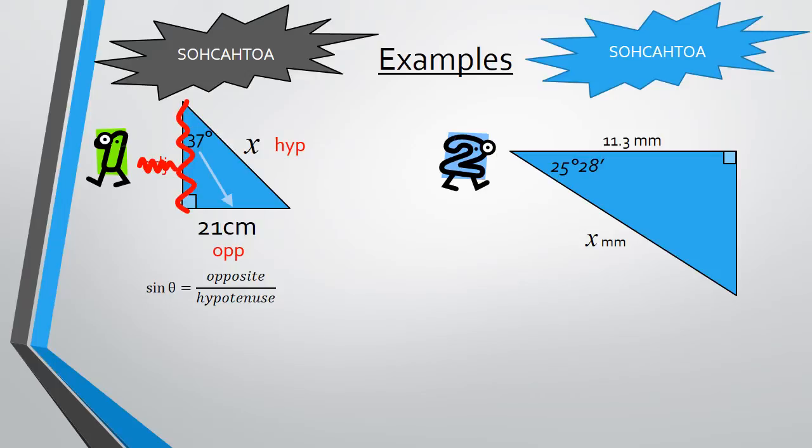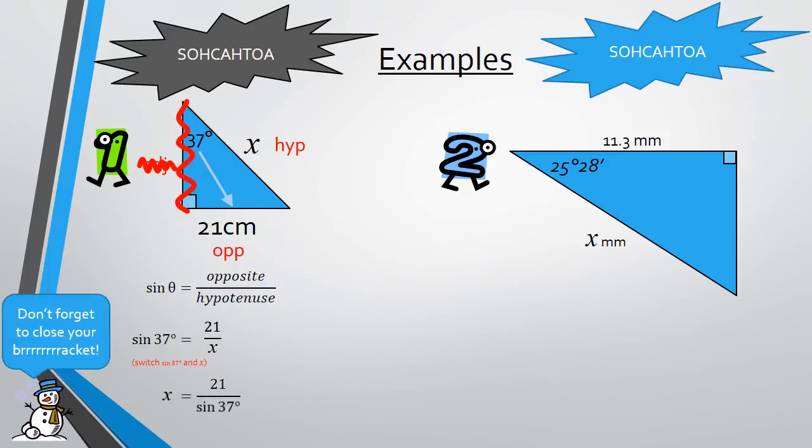We replace the information that we know. We know that theta is 37 degrees. We know the opposite is 21. And we know the hypotenuse is x. So sine 37 degrees equals 21 over x. Now the x is on the bottom on the denominator. So we're going to switch the sine 37 degrees and the x in order to be able to solve this equation. Now when you're typing this in the calculator, don't forget to close your bracket just like the snowman says. And x equals 34.89 centimeters, correct to two decimal places.